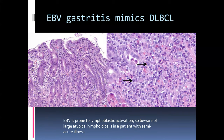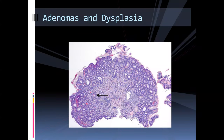Another infectious entity with lymphoma association is Epstein-Barr virus gastritis. This can actually mimic diffuse large B-cell lymphoma — much as it does in the tonsil — with a very marked lymphoblastic response that looks for all the world like a potential malignancy. Being aware of this possibility in the right demographic group, age-wise and history-wise — a patient with a semi-acute illness, a little bit of fever — allows you to think about EBV gastritis.